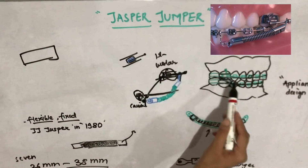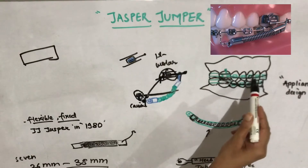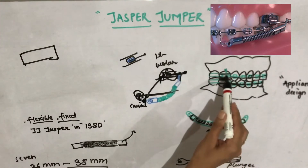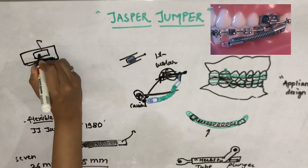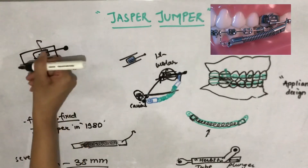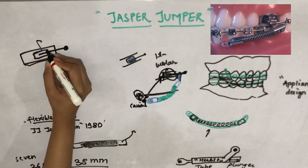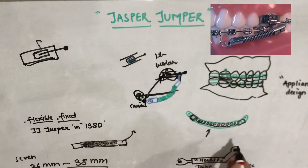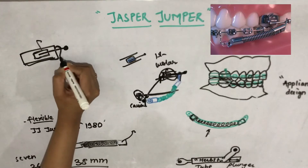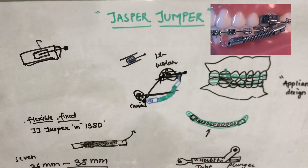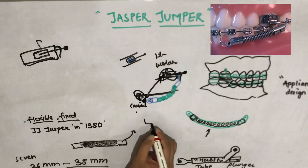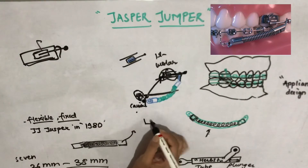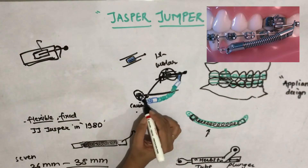The molars have bands with a tube called the facebow tube. The ball pin goes inside this tube like a screw, attaching the Jasper Jumper module posteriorly on the maxillary arch. On the mandibular side, the module is anchored to the lower arch wire distal to the mandibular canine by a small bayonet bend, with a Lexan ball present at this attachment point.